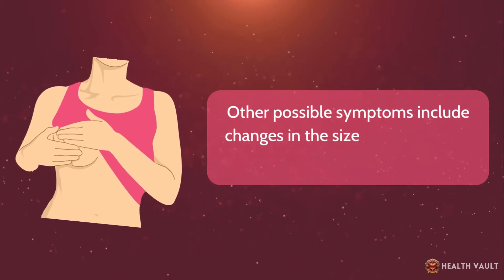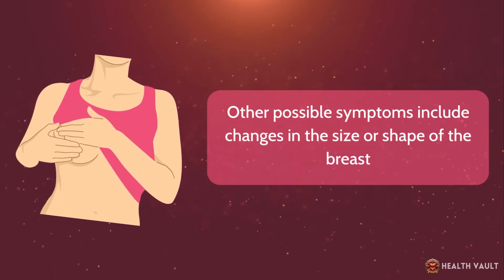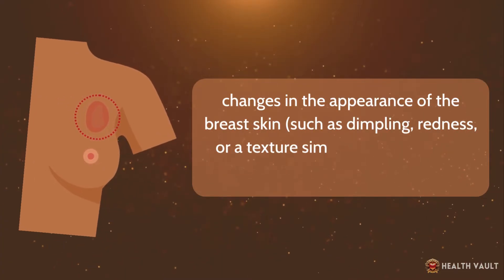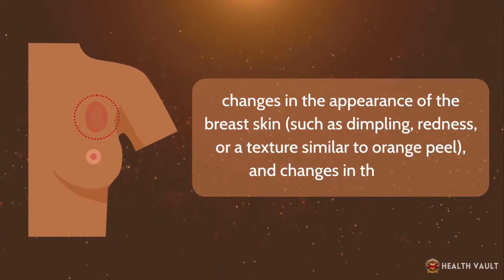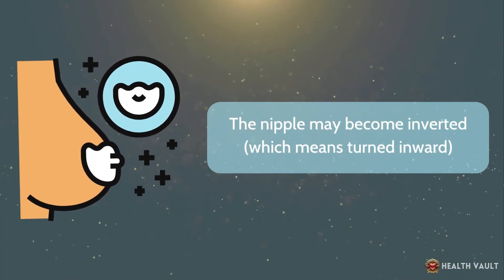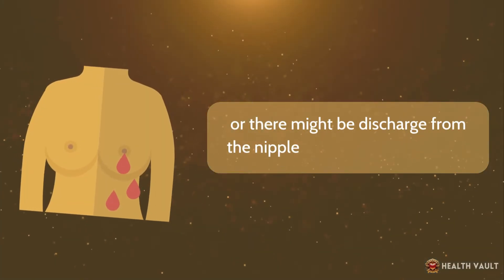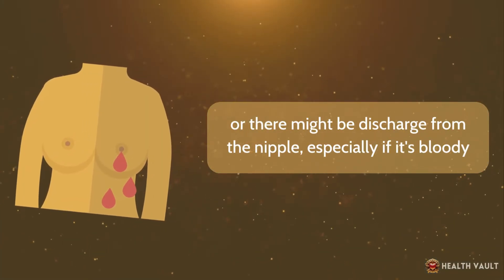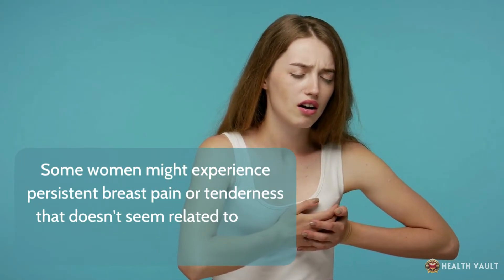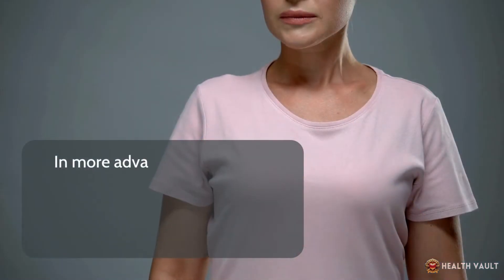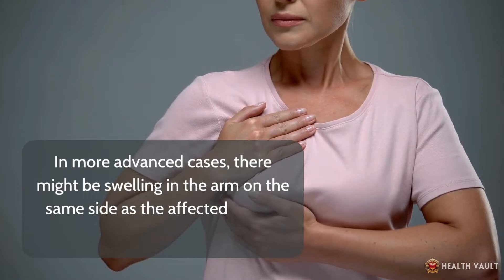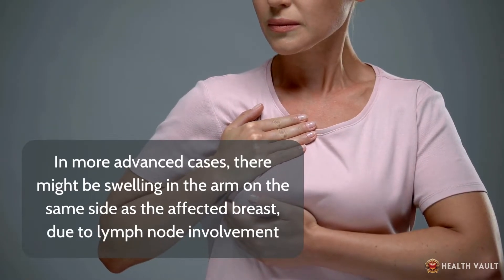Other possible symptoms include changes in the size or shape of the breast, changes in the appearance of the breast skin such as dimpling, redness, or a texture similar to orange peel, and changes in the nipple. The nipple may become inverted, or there might be discharge from the nipple, especially if it's bloody. Some women might experience persistent breast pain or tenderness that doesn't seem related to their menstrual cycle. In more advanced cases, there might be swelling in the arm on the same side as the affected breast, due to lymph node involvement.